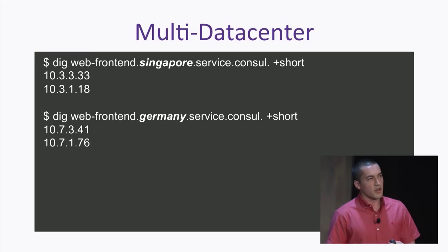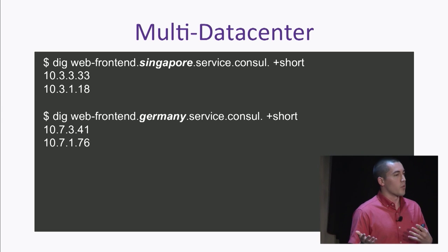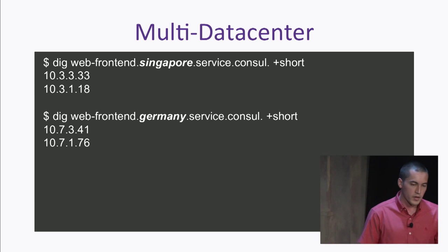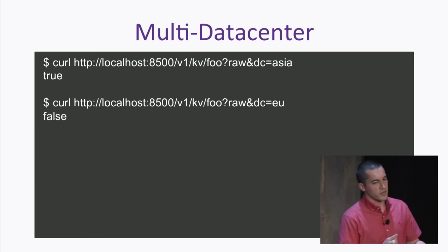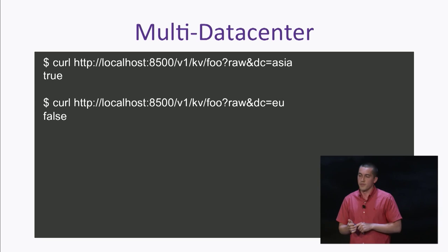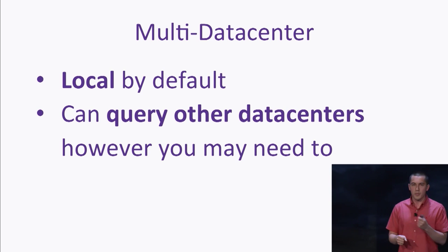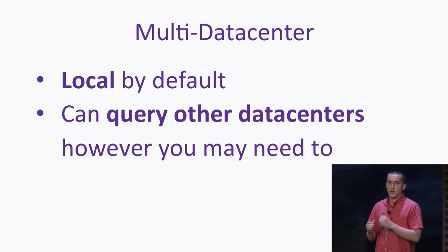Consul makes multi-data-center support a top-level feature. When requesting services, you can explicitly ask Consul for 'the web front end in Singapore' or 'the web front end in Germany,' or more broadly 'give me the local one but if you must, give me one elsewhere in the world.' For key-values you can also scope queries to the data center level — one query requests key 'foo' from Asia, another from the EU. It's local by default since you almost always want the local answer, but you can query other data centers when needed.